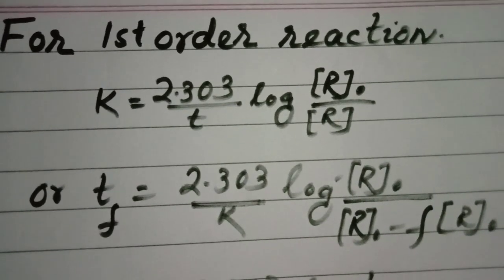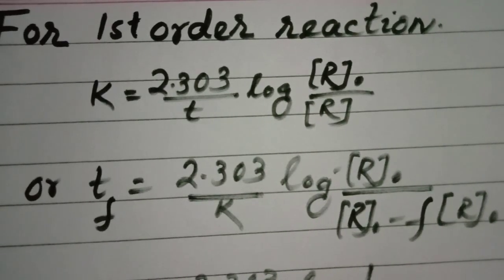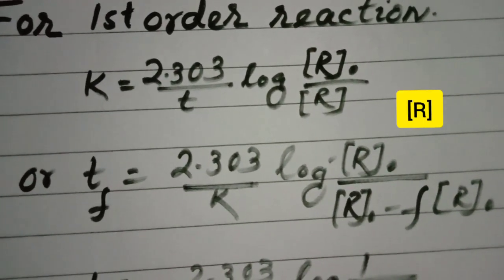Or you can say t is equal to 2.303 by k log r0 by r. Where r0 is the initial concentration of the reactant, r is the present concentration.